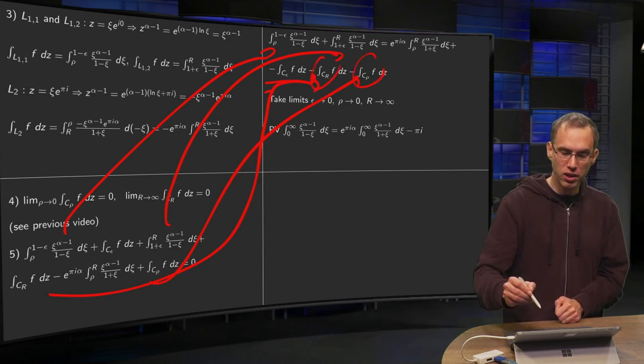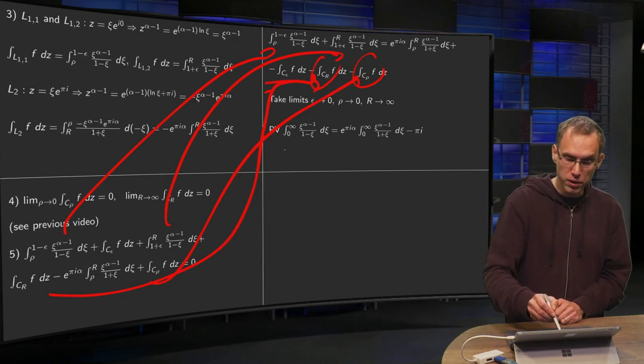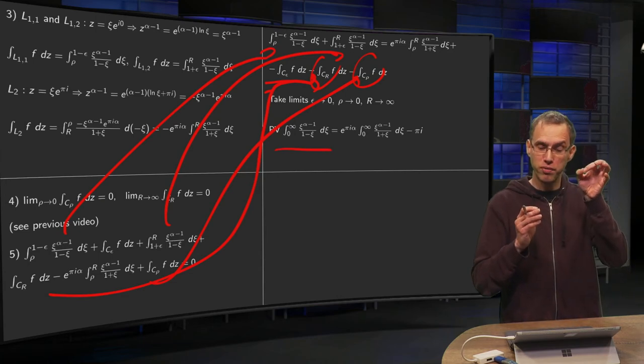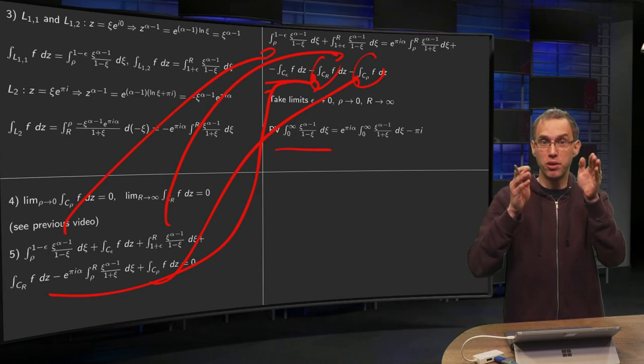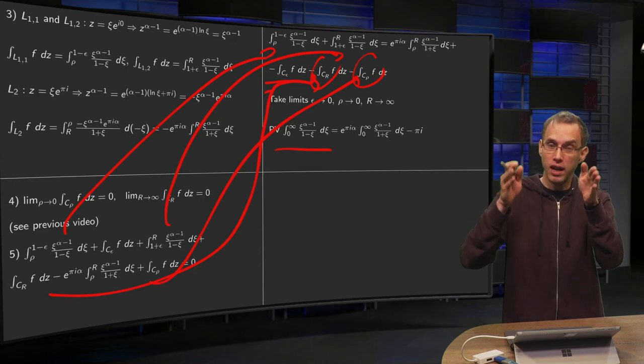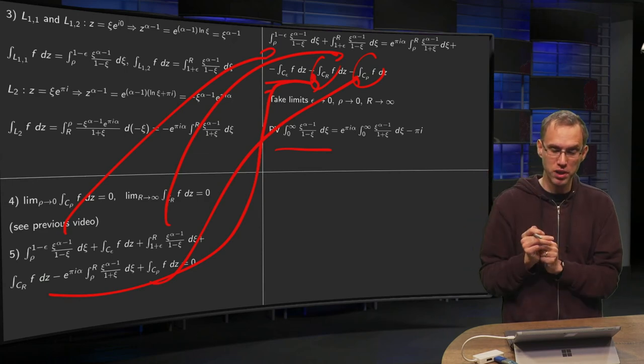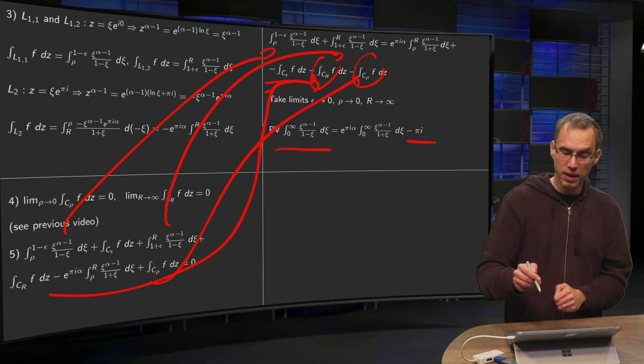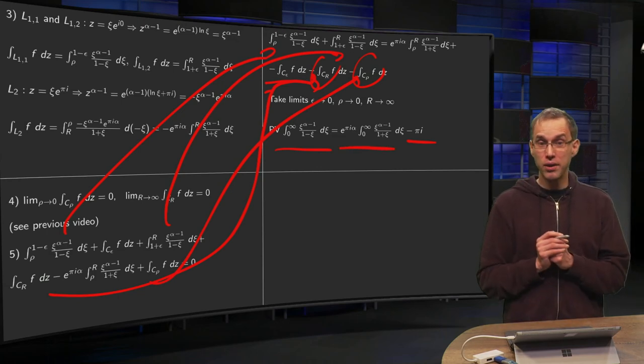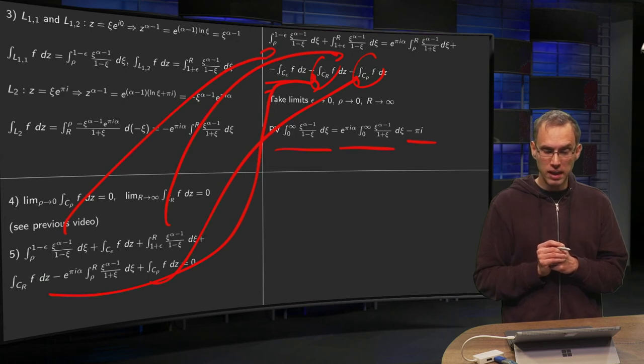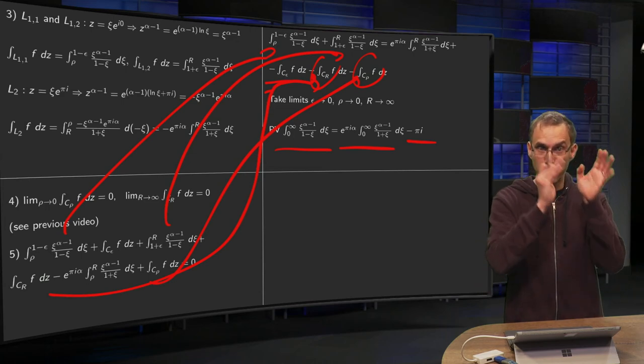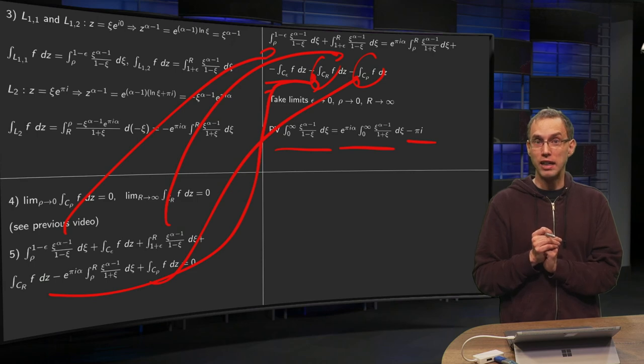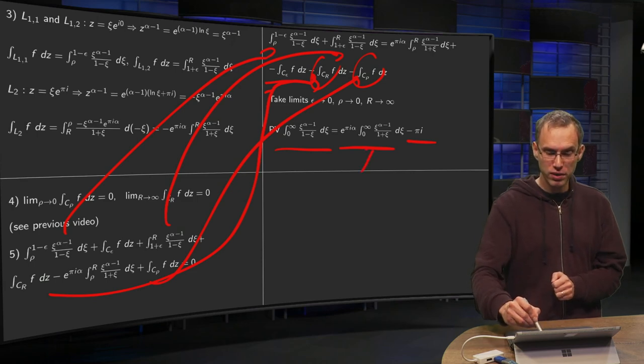These integrals are going to cancel out. And you get the principal value of the integral from 0 to infinity, what you want. A principal value because you go from 1 minus epsilon and 1 plus epsilon. Take this epsilon at the same rate to 0. And what you are left with is your c epsilon integral, which gives you a minus pi i. And another integral, the 1 over L2. So that's annoying. Now you have the integral you want as another integral minus pi i. How do we get rid of this other integral?